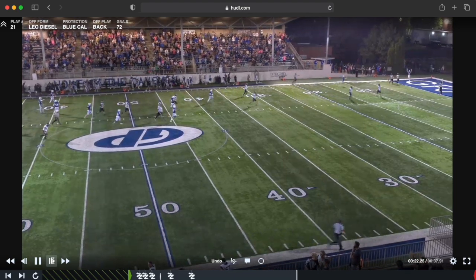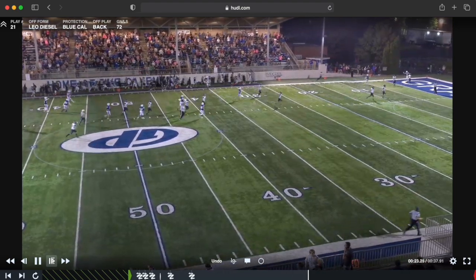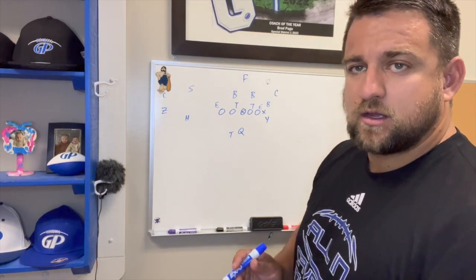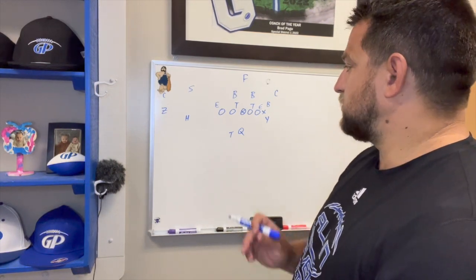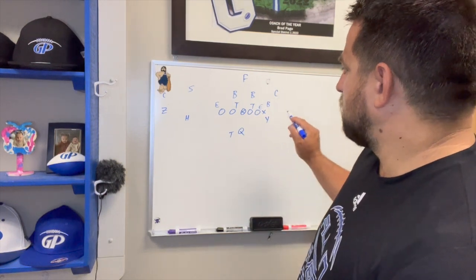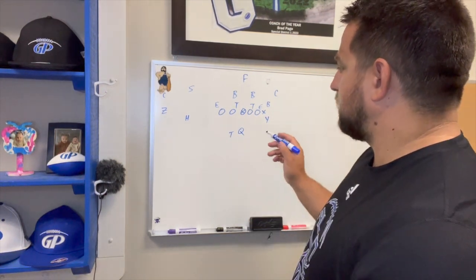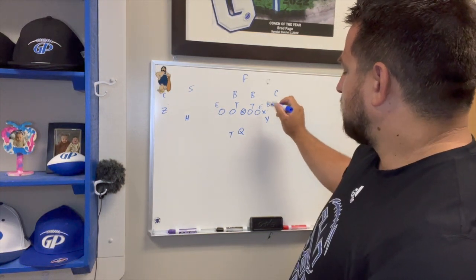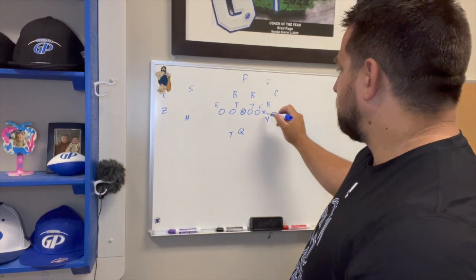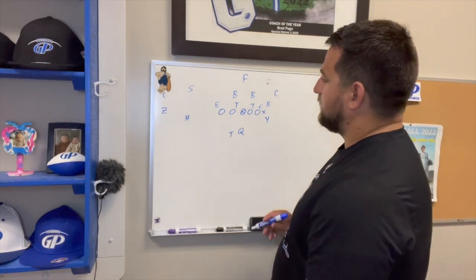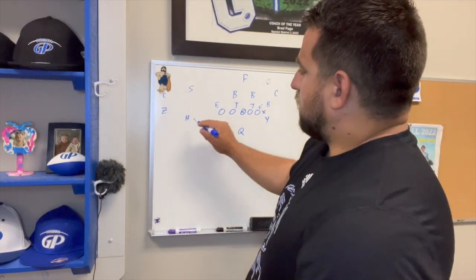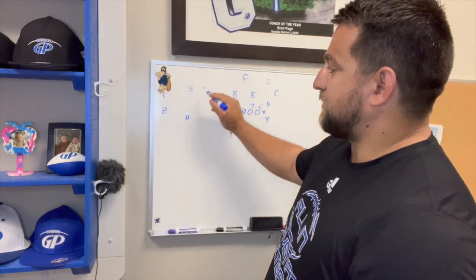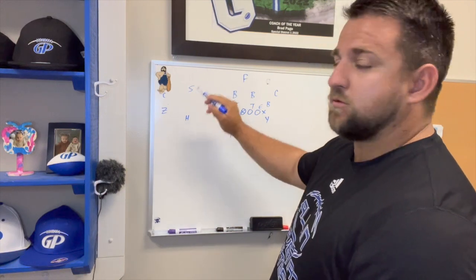Now we're going to go over some chalk time and draw up how we want to block our counter with the GY. We're playing maybe a 4-2 or 4-3 defense. We're in our two tight end look — we call our tight ends X and Y, and they're going to be in a tight end-wing combo. Our receivers will always have a job on a run play — they might have a pre-snap option to run a route if we want to throw quick, but on our counters they have to block because we're coming back their way.